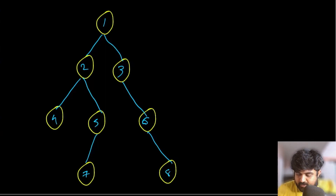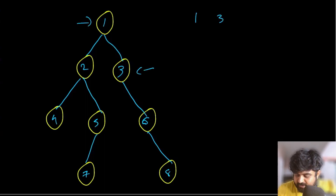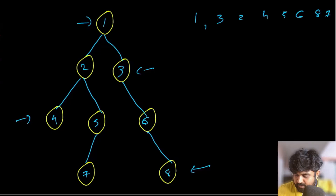For a given input, the zigzag level order traversal would first visit value 1, then 3 and 2 in that fashion, then 4, 5, 6, and then 8 and 7. This is the expected answer for the zigzag traversal.